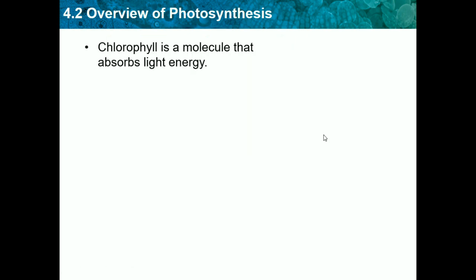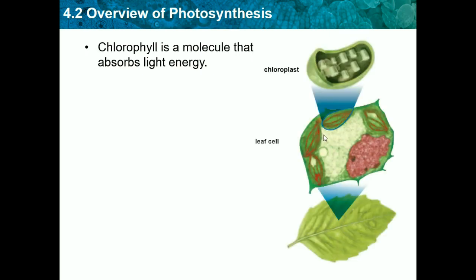Chlorophyll is a molecule that absorbs light. Chlorophyll is in plants, inside the cell. Inside a plant cell there is an organelle called the chloroplast, which is where all photosynthesis happens. In the leaves there are plant cells which contain chloroplasts, and the chloroplasts contain chlorophyll. This is also why plants are green.